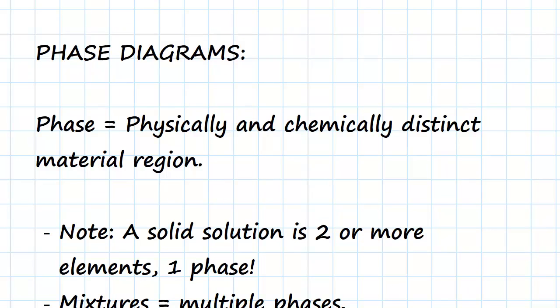Okay, so what do we actually mean when we say a phase? Well, phase is a physically and chemically distinct material region. We have certain regions within a material which will have different physical and chemical properties, and these different regions are called different phases.